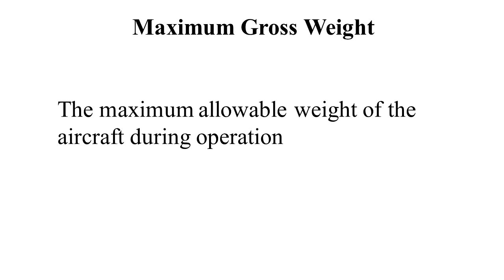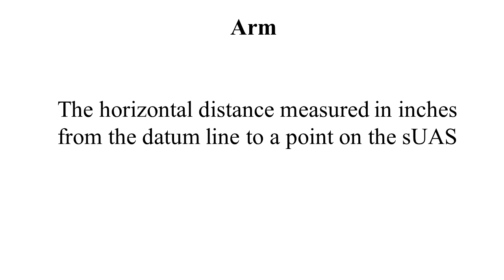Maximum gross weight is the maximum allowable weight of the aircraft during operation. Excessive weight reduces flight performance in almost every respect. In addition, operating above the maximum gross weight limitation can compromise the structural integrity of an unmanned aircraft. The arm is the horizontal distance measured in inches from the datum line to a point of the SUAS. If measured aft toward the defined rear of the aircraft, the arm is given as a positive value. If measured forward toward the defined front, the arm is given as a negative value.